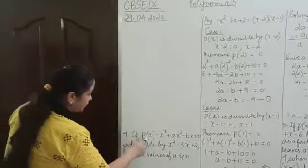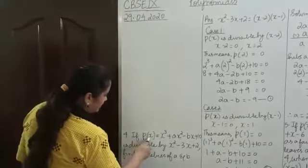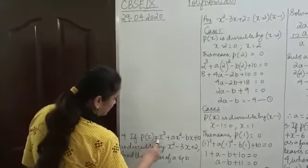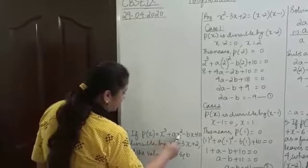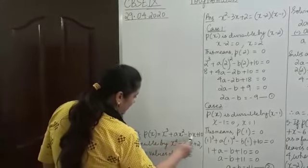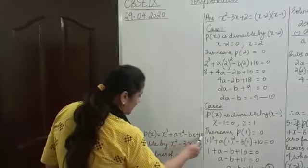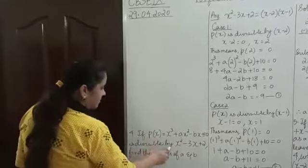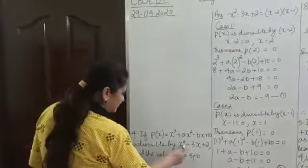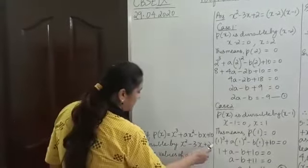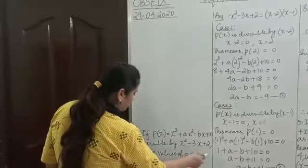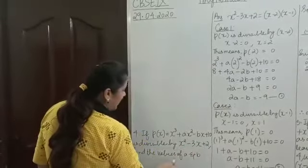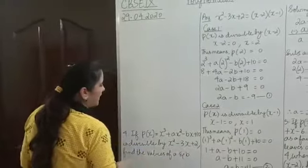If P of X, which is equal to X cubed plus AX squared minus BX plus 10, is divisible by X squared minus 3X plus 2, find the values of A and B.